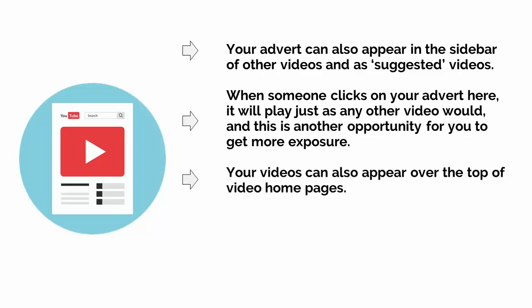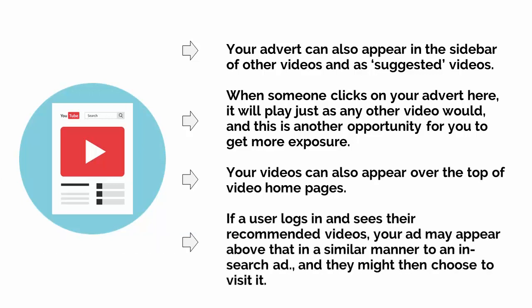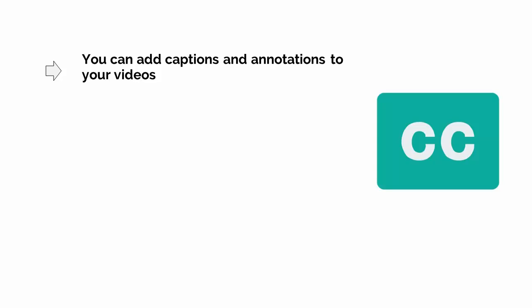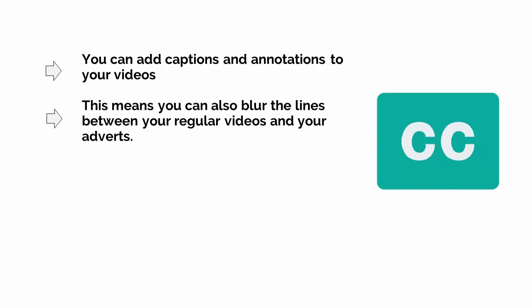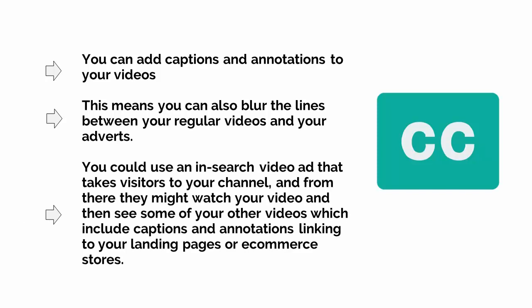Likewise, your videos can also appear over the top of video homepages. So if a user logs in and sees their recommended videos, your ad may appear above that in a similar manner to an InSearch ad and they might choose to visit it. Another option to consider is that you can add captions and annotations to your videos, which can be a better way to link to external pages. This is actually a way that you can circumvent the limitations of InSearch ads, as you can use these captions to link directly to landing pages or your website. This means that you can also blur the lines between your regular videos and your adverts — for instance, you could use an InSearch video ad that takes visitors to your channel, and from there they might watch your video and then see some of your other videos, which include captions and annotations linking to your landing pages or e-commerce stores.